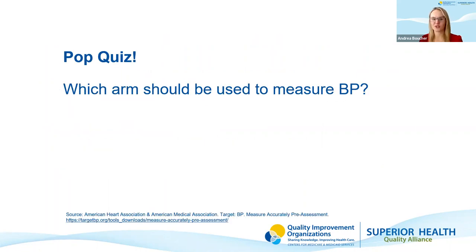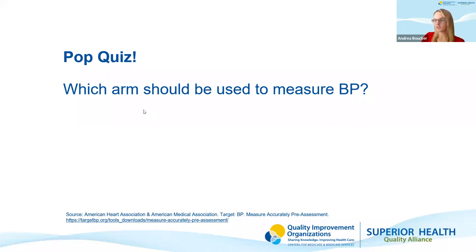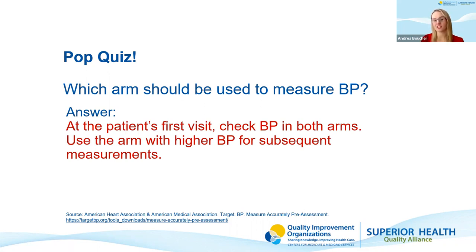Here's another pop quiz: which arm should be used to measure a blood pressure? The answer is actually per patient. At the first visit, you want to check blood pressure in both arms. At subsequent visits, use the arm that had the higher blood pressure reading. So it's almost a trick question.